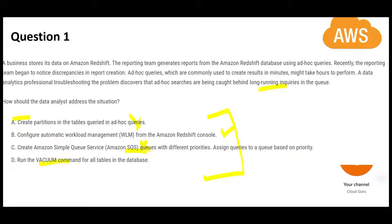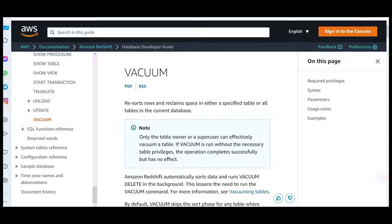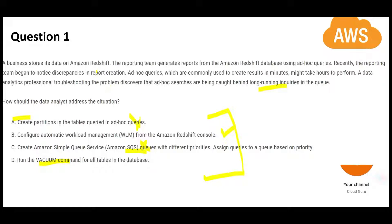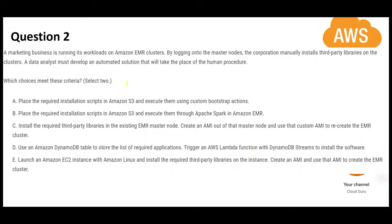Option D is the vacuum command. The vacuum command resorts rows and reclaims space — for example, after many truncate or delete operations, the space is still occupied and vacuum releases it. The question is not asking about freeing up space, so D is wrong. Option B — WLM — is the right answer.